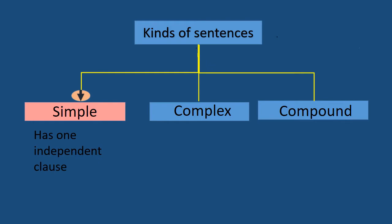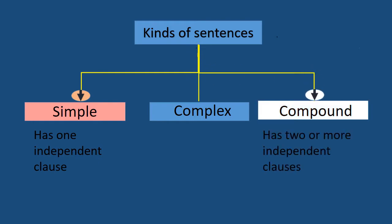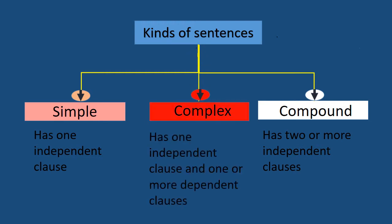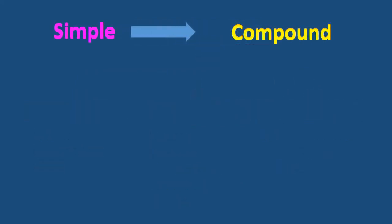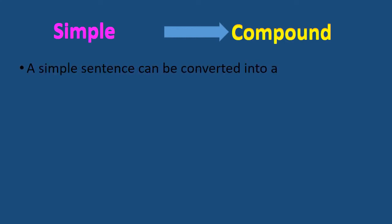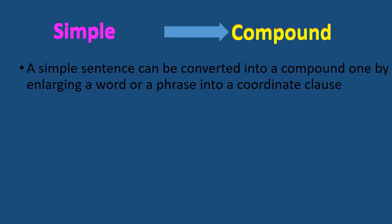We will discuss the second type of sentence and the two types of sentences. If you already know everything about it, you will find it posted in a video for reference. Let's start with the simple sentence and the compound. A simple sentence can be converted into a compound one by enlarging a word or a phrase into a coordinate clause.